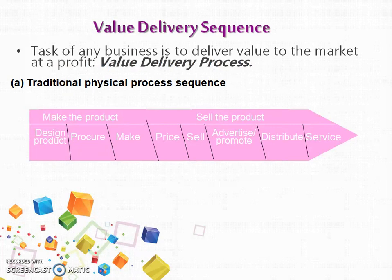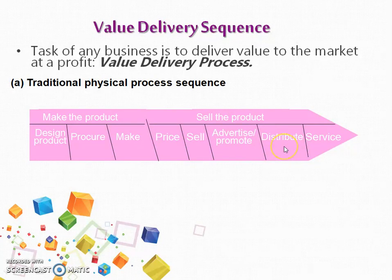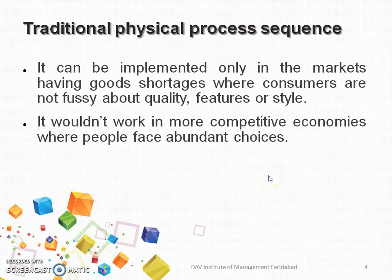If we talk about delivering value, traditionally it was only about making and selling the product. As we can see in the diagram, making the product means designing it, procuring raw material, and manufacturing it. Then selling involves deciding about the price, advertising, distributing through various channel mediums, and finally providing after-sale services.